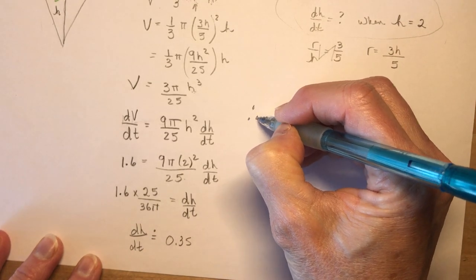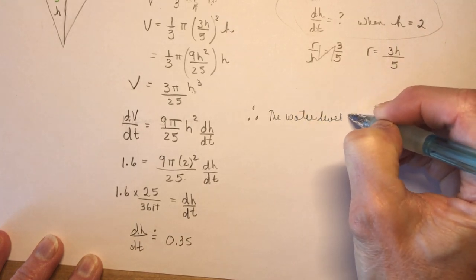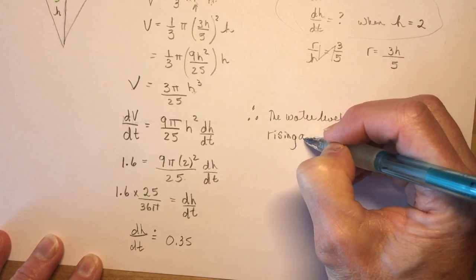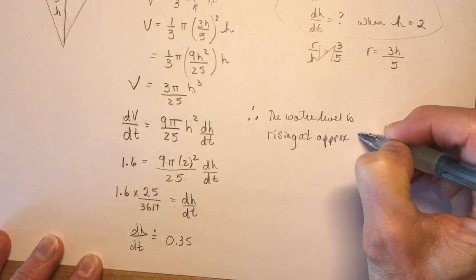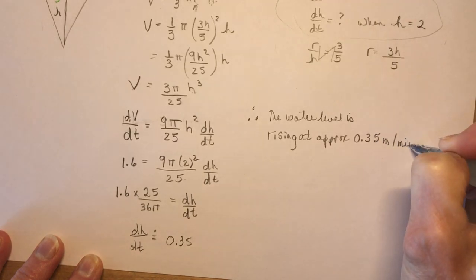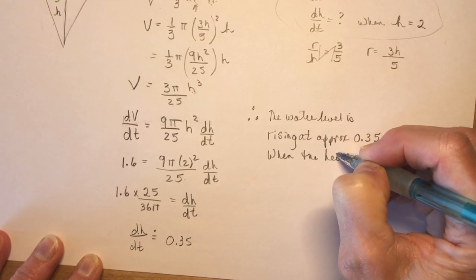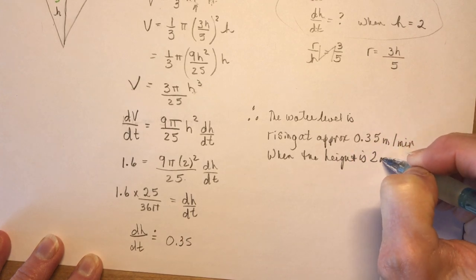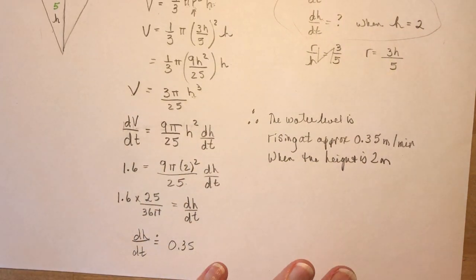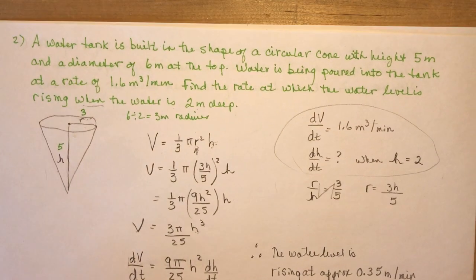So therefore the water level is rising — we know it's positive and water is being poured in — at approximately 0.35 meters per minute when the height or depth of the water is 2 meters. That's a nice little problem for a water tank — next time you see a conical water tank you can find the rate of change.